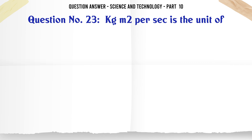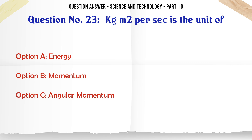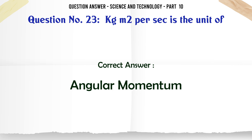Kg·m² per sec is the unit of. A. Energy. B. Momentum. C. Angular momentum. D. Power. The correct answer is Angular momentum.